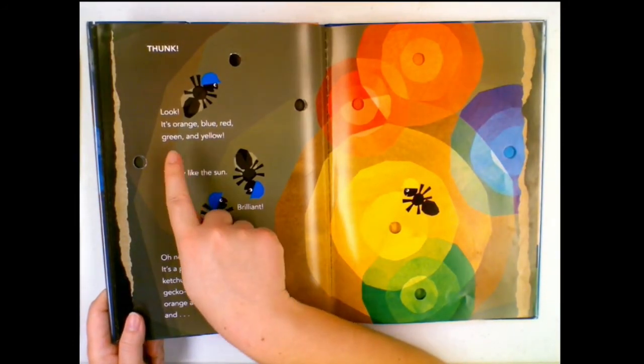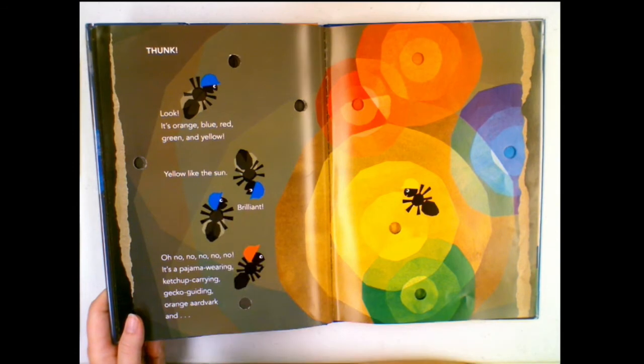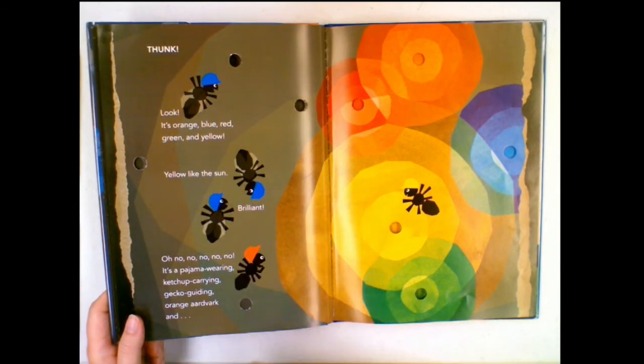Look! It's orange, blue, red, green, and yellow. Yellow like the sun. Brilliant!